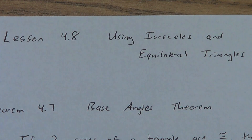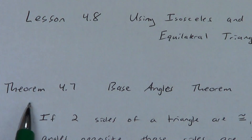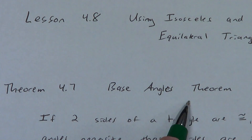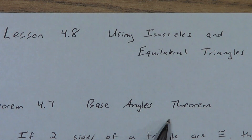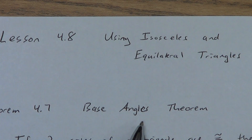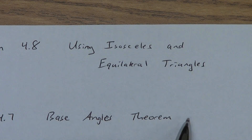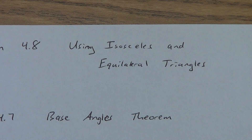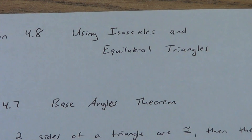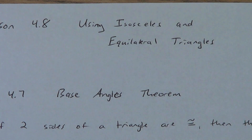We're talking about isosceles and equilateral triangles. Our first theorem is Theorem 4.7, called the Base Angles Theorem. Most of the time when we say Base Angles Theorem, we are talking about triangles. We do later on have a Base Angle Theorem for isosceles trapezoids as well. So we could call this the Base Angle Theorem for isosceles triangles, but usually when we just say Base Angles Theorem, we realize we're talking about triangles.